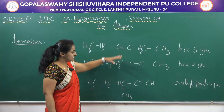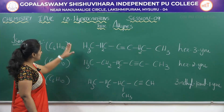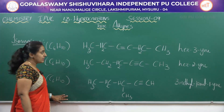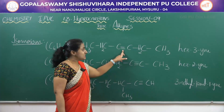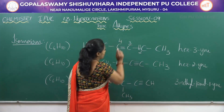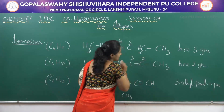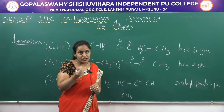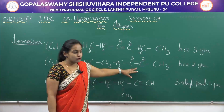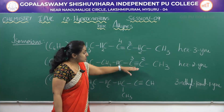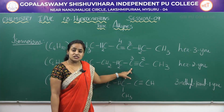Let us consider these examples. When you observe the molecular formula of these three compounds, all three have the same molecular formula. When you compare the first and second compound, in the first compound the triple bond is present between positions three and four, while in the second compound the triple bond is between positions two and three. Since the triple bond is a functional group, there is a change in the position of the functional group between examples one and two. Therefore, examples one and two exhibit position isomerism.